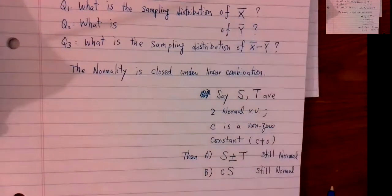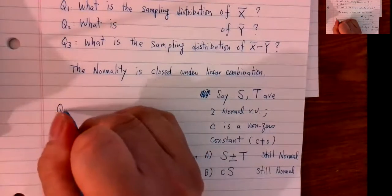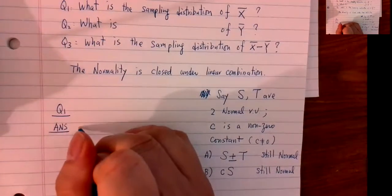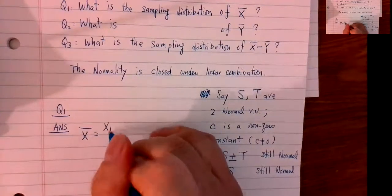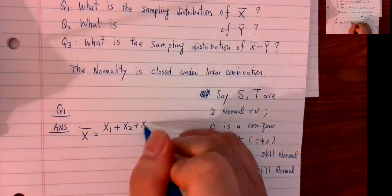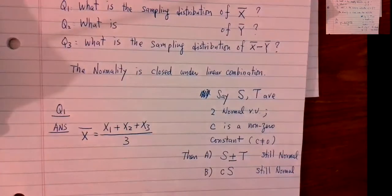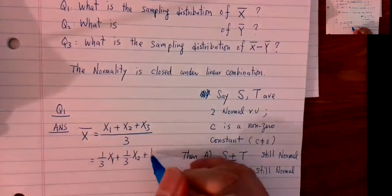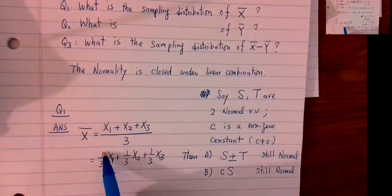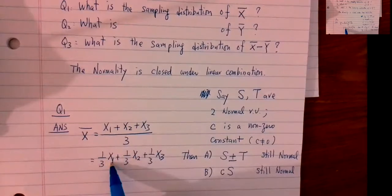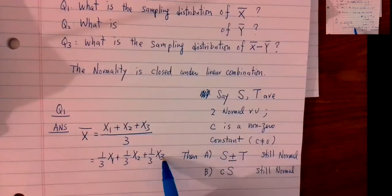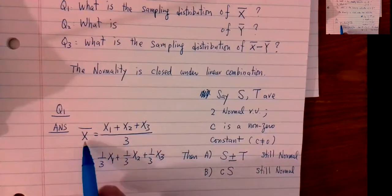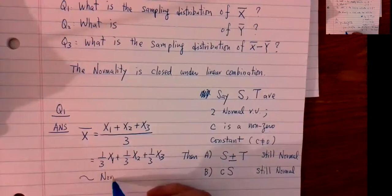Let's look at question one. What is the sampling distribution of x̄? We know x̄ can be written as (x1 + x2 + x3) / 3, that is 1/3·x1 + 1/3·x2 + 1/3·x3. Since 1/3 is a non-zero constant and x1 follows normal, a constant times a normal is still normal. So the sampling distribution of x̄ still follows normal. But that's not good enough — we also need to find its mean and variance.